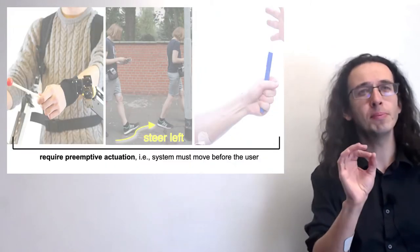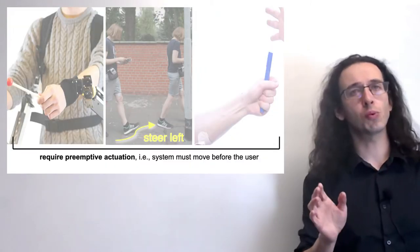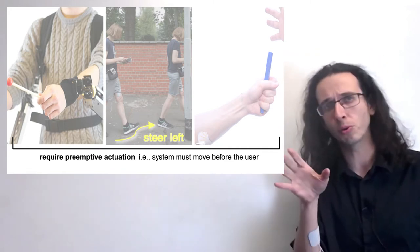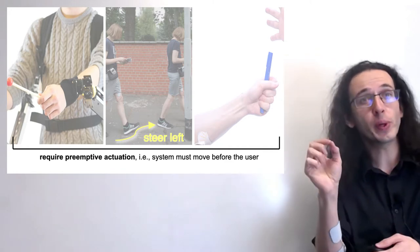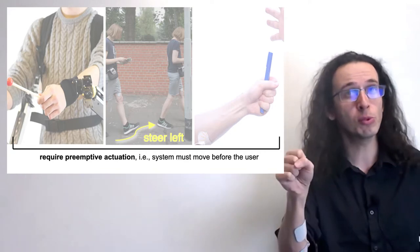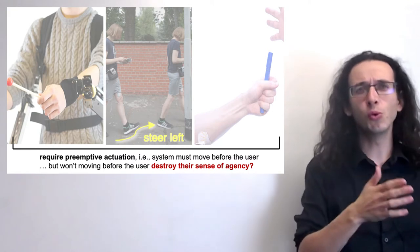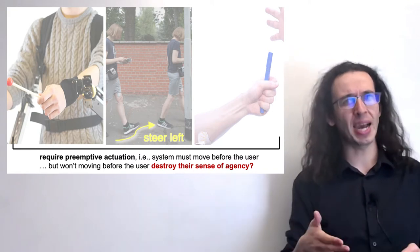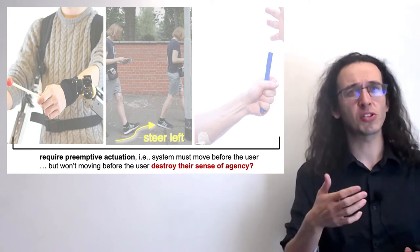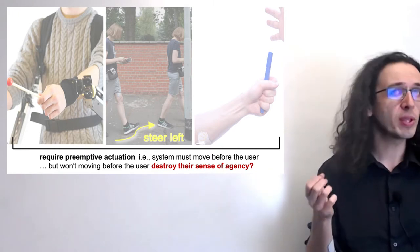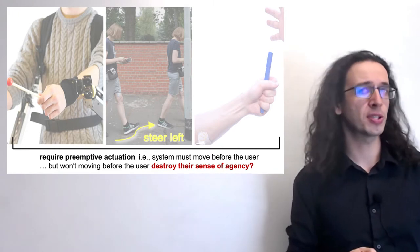But for all of these to work, they require pre-emptive actuation. In other words, you can only ensure that the system plays the drums or avoids the obstacle or catches the pen by actuating before the user would normally move. And this raises a very difficult question. Doesn't moving before the user negatively impact their sense of agency? Because the users now feel like they did not initiate the action.